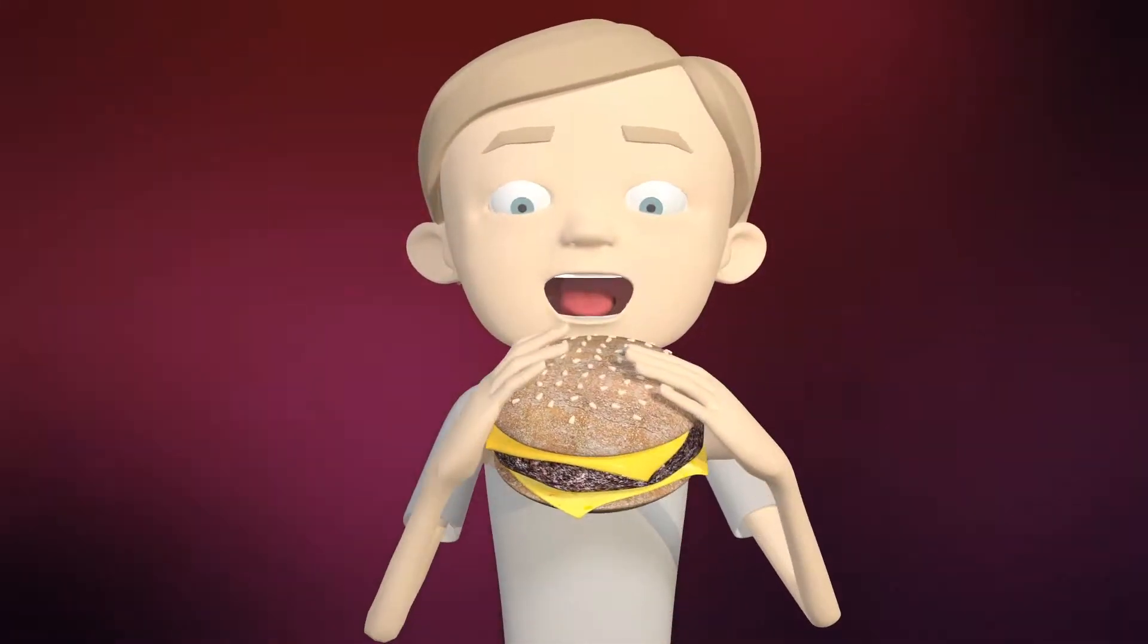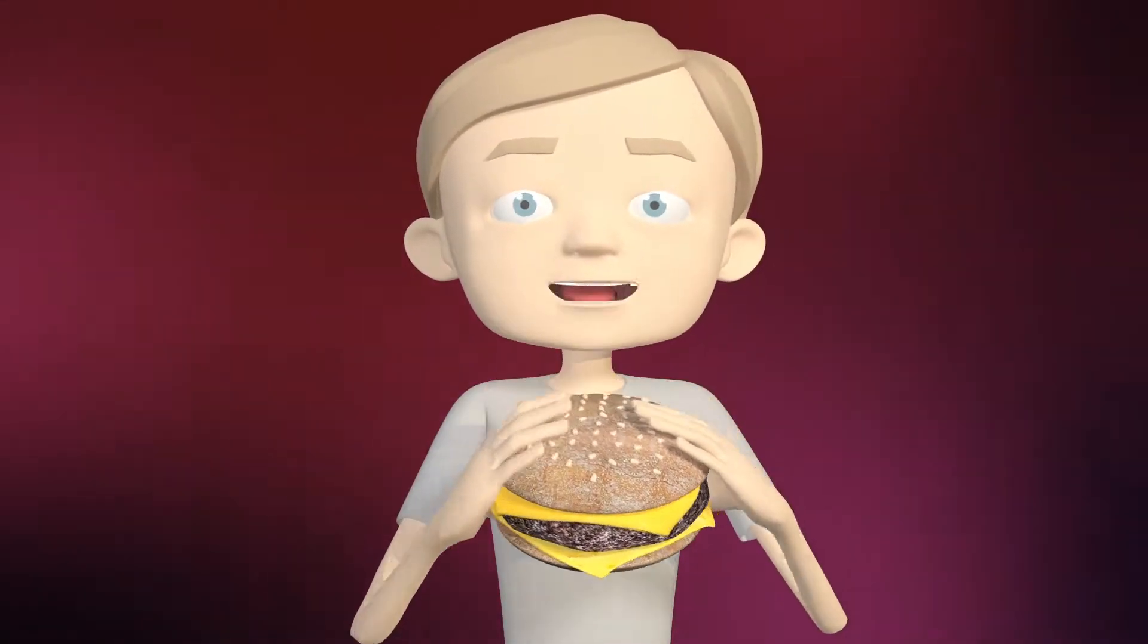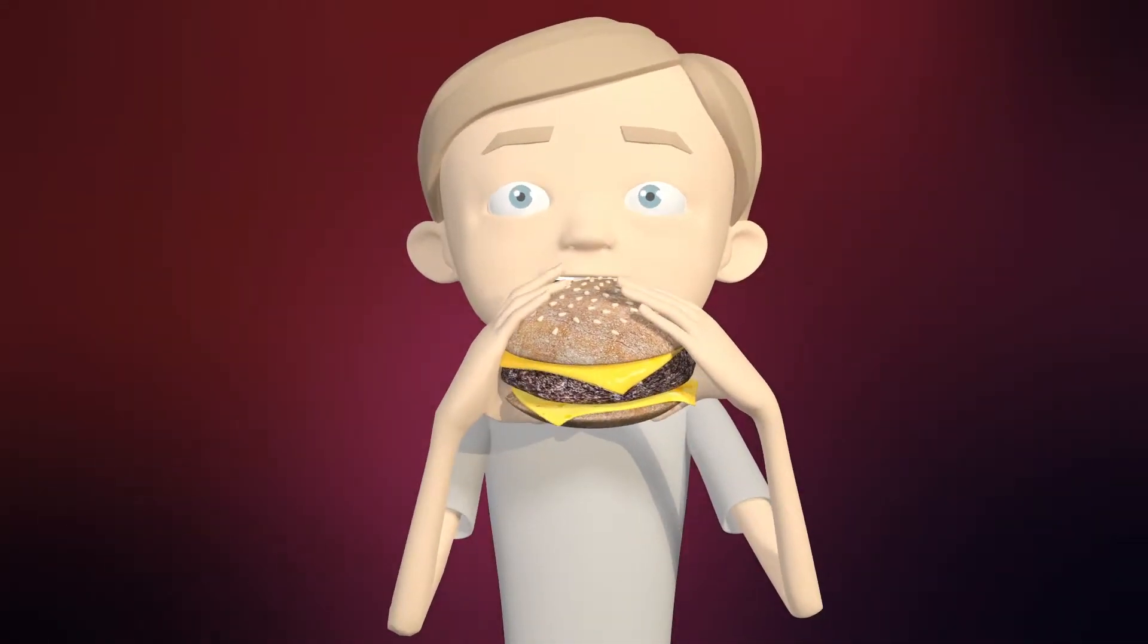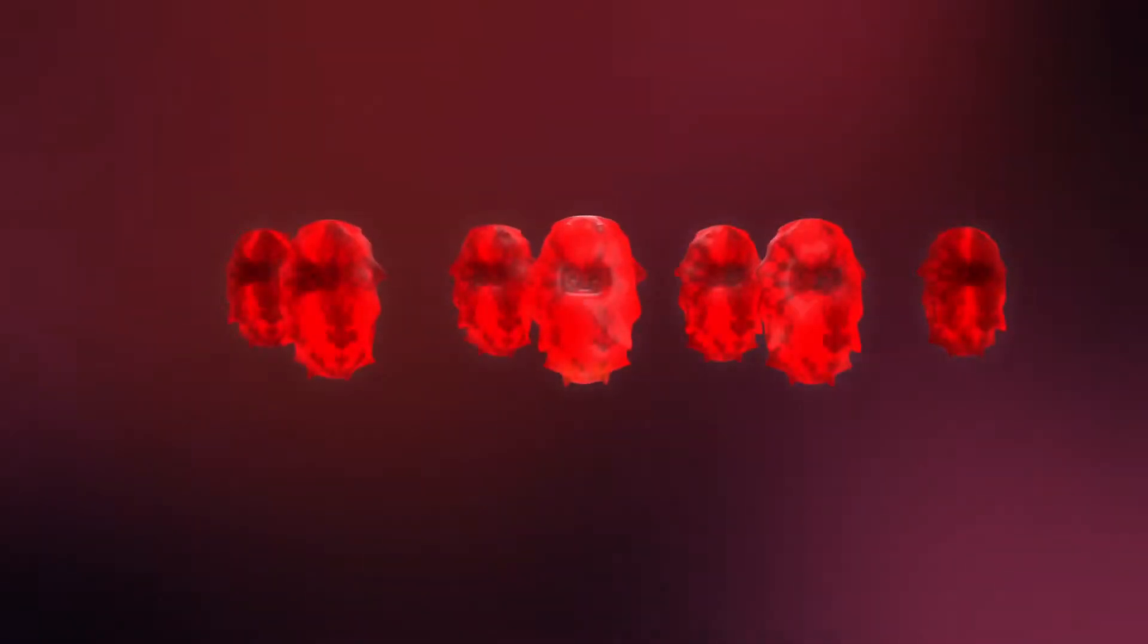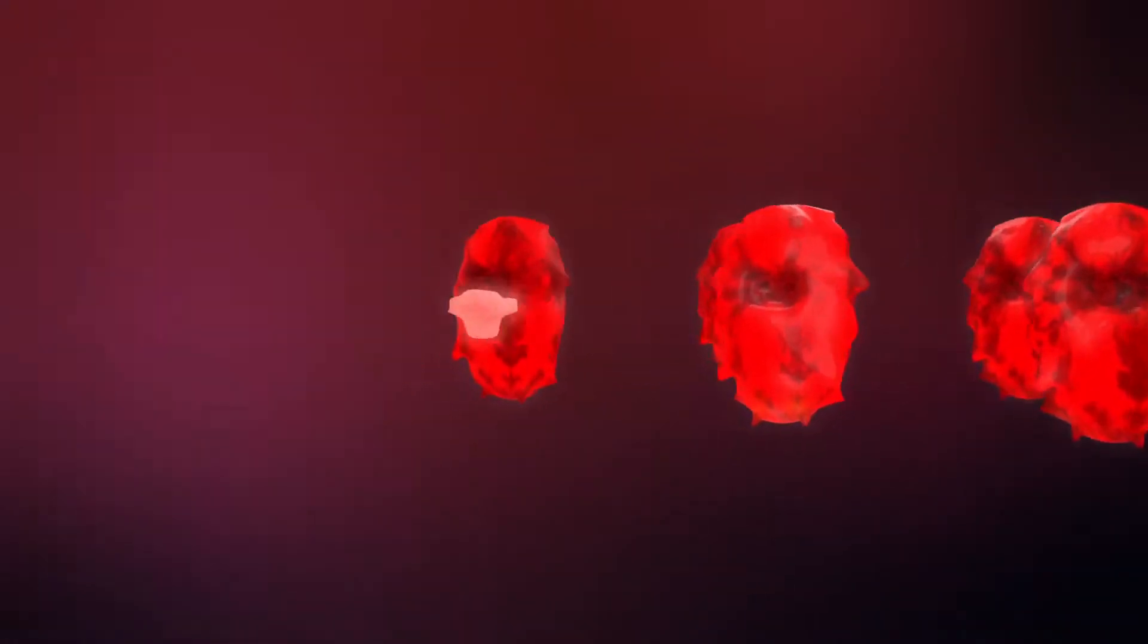For example, when food is eaten, mechanical digestion begins in the mouth, where food is chewed and swallowed, proceeding down the digestive tract. As food enters the small intestine, it is saturated with enzymes.